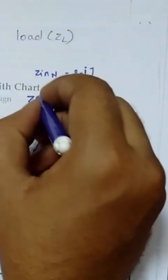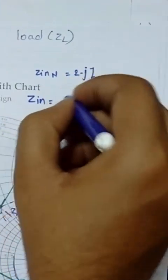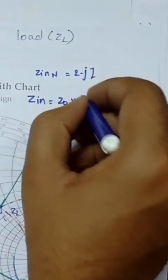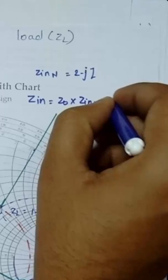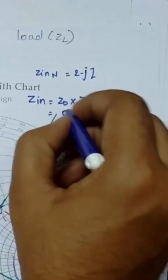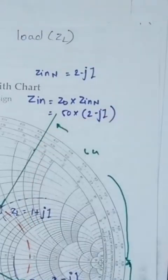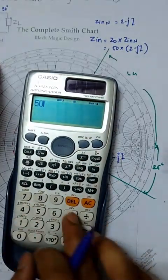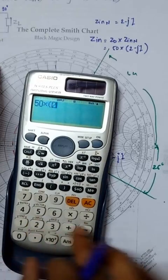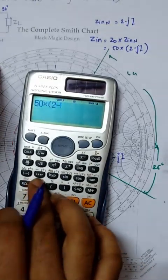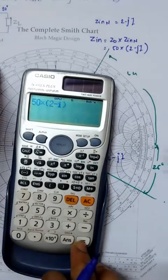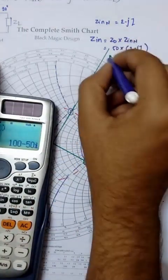Now I have to find Zin value, which is Z0 times Zin normalized, equals 50 times 2 minus j1. You can calculate it: 50 times 2 minus j1, which equals 100 minus 50j.